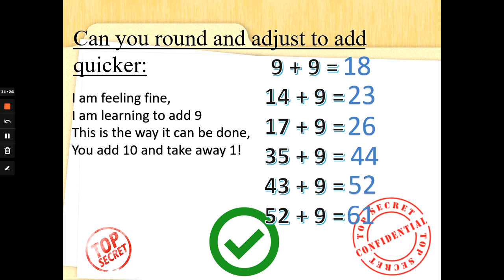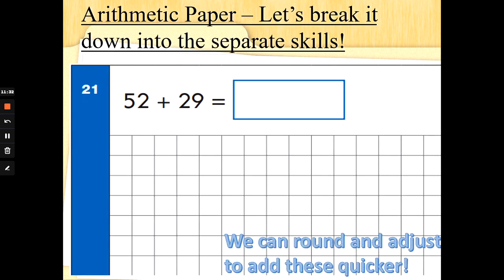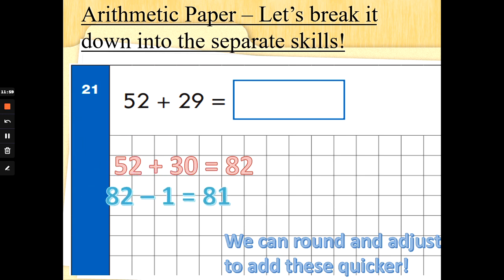Now this is a little bit tricky — I'm going to show you two more from the arithmetic paper and we'll come back to this in more detail next time. 52 add 29: we can round and adjust to add these quickly. The squared paper means you can show your working out. 29 is 1 away from 30, so I would do 52 add 30: 62, 72, 82 — but I was only supposed to add 29, so I need to take 1 away. 82 take away 1 is 81. So I added 30 and then took 1 away: you add 30 and take away 1.